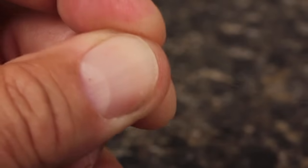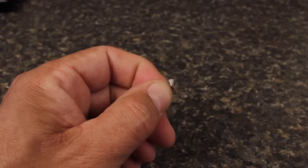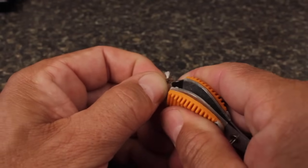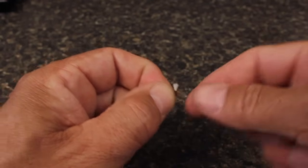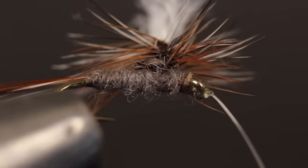Here, 7X Tippet is used to tie on a size 22 parachute adams. Oftentimes, the hardest part is locating the tag end to snip it off. Up close, you can really see how small and unobtrusive the knot is.